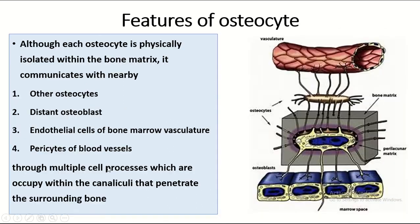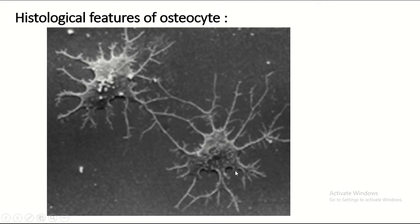The osteocyte communicates with other osteocytes via cytoplasmic processes, and also communicates with the endothelial cells of the bone marrow, pericytes of blood vessels, and osteoclasts. Here you can see one osteocyte communicating with another osteocyte through cytoplasmic processes.